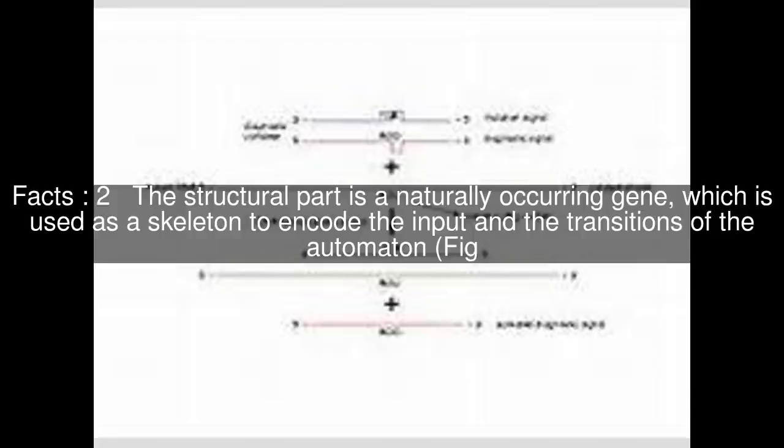The structural part is a naturally occurring gene, which is used as a skeleton to encode the input and the transitions of the automaton.